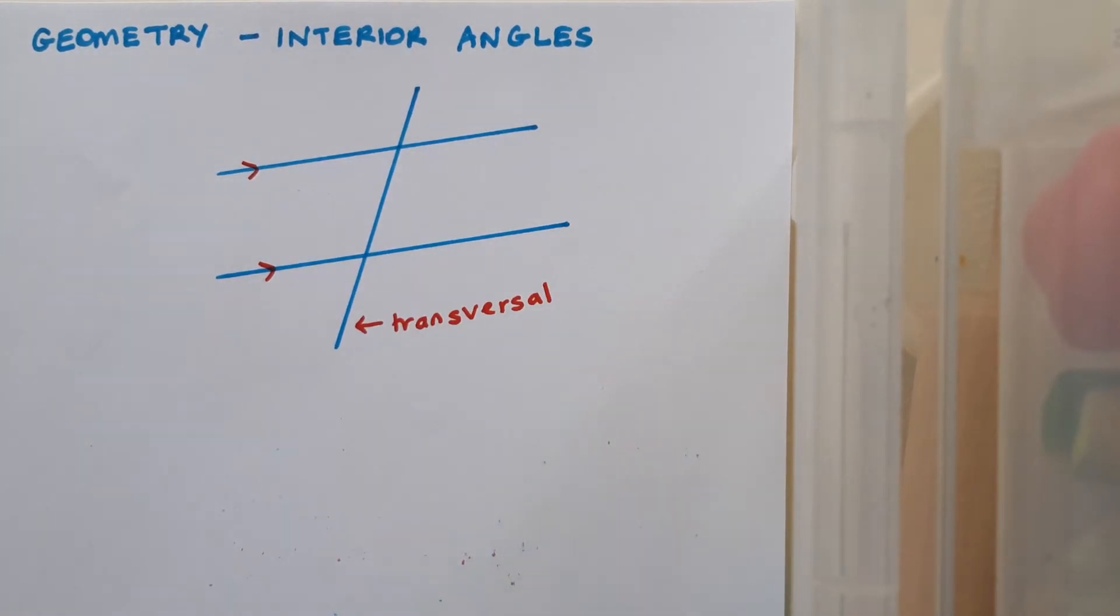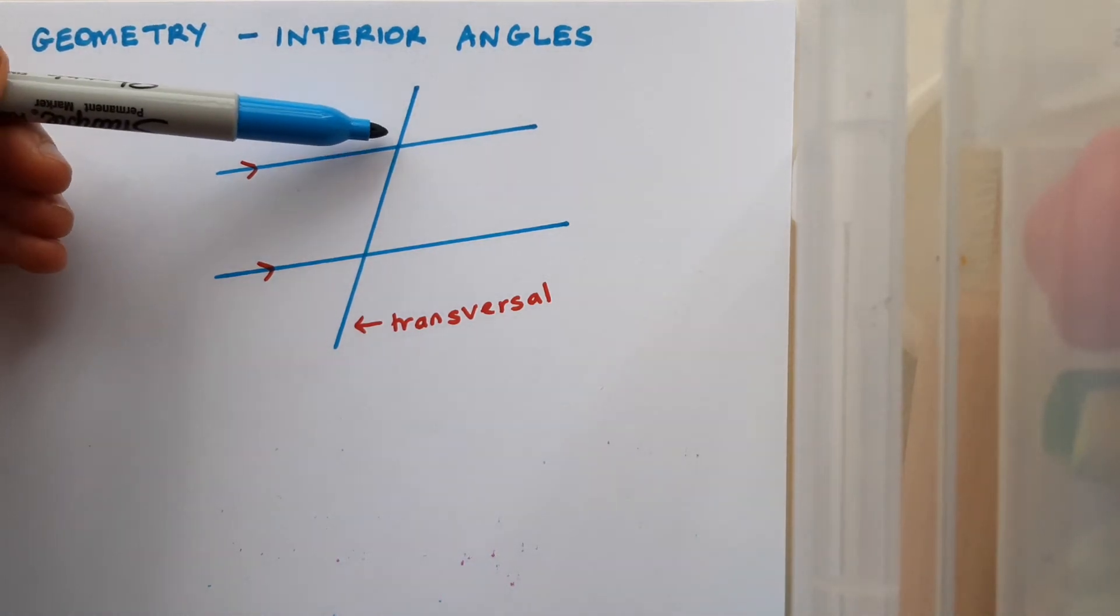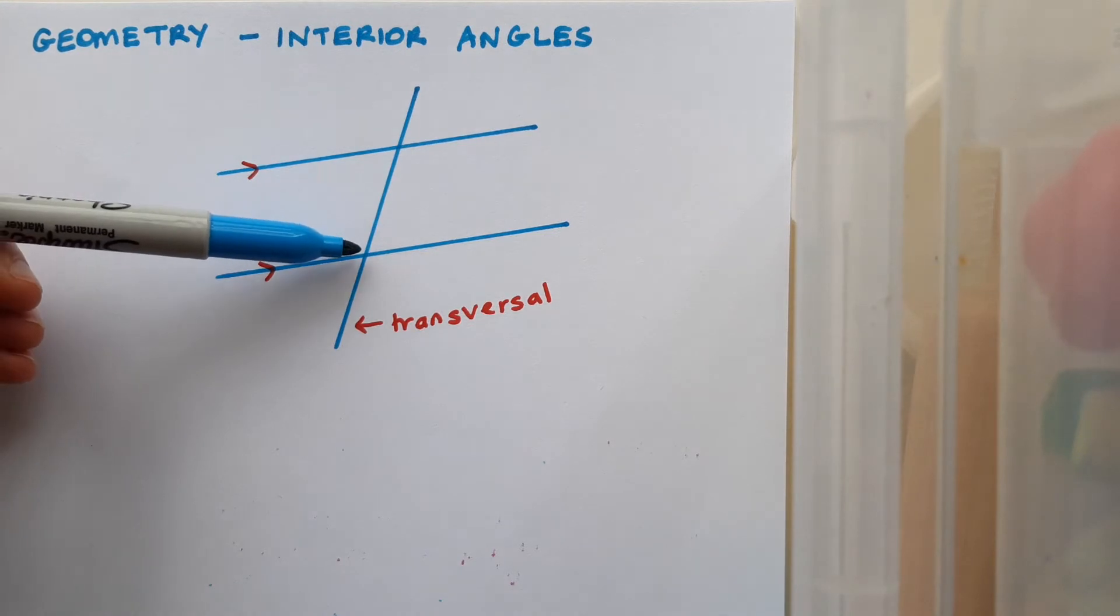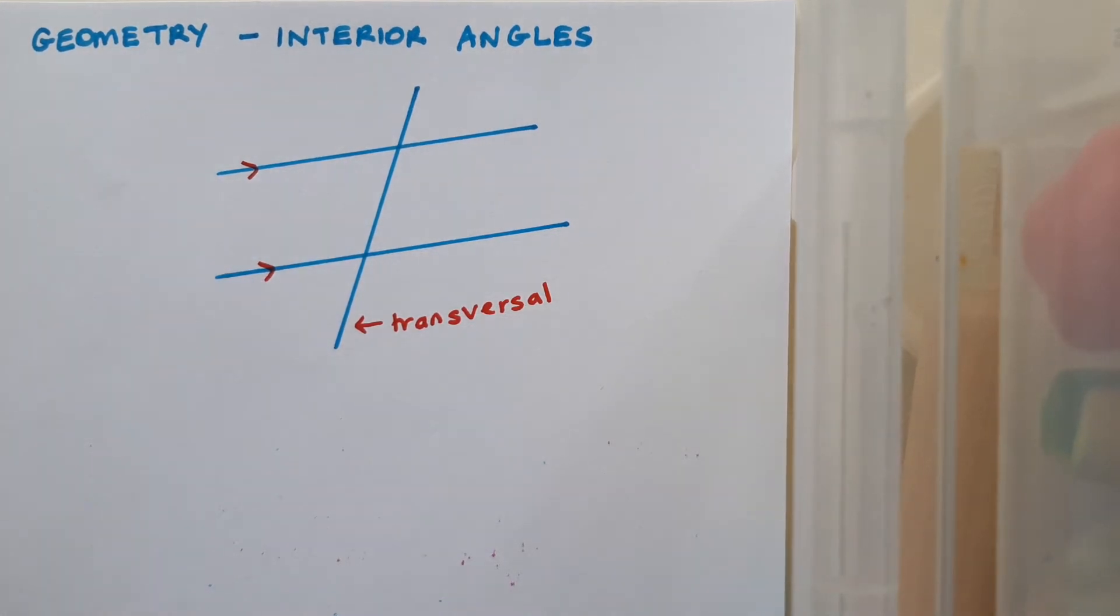We've already spoken about how the transversal creates corresponding angles, for example this angle here and this angle here are corresponding. We've also spoken about how the transversal creates alternate angles, for example this angle here and this angle here are alternate angles.